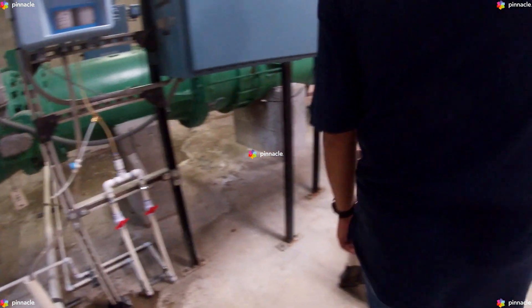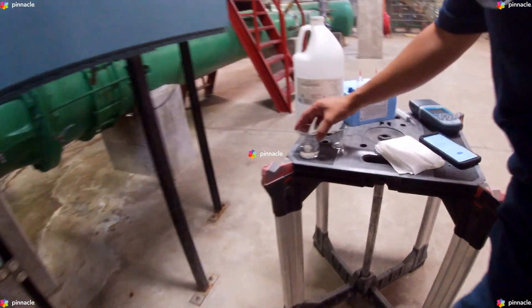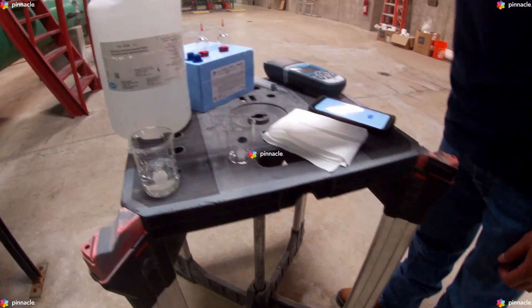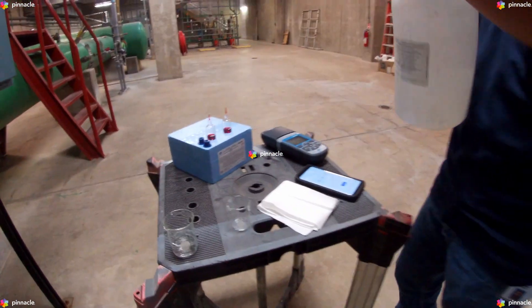We will prepare our blank by pouring at least 40 milliliters of deionized water into our beaker.